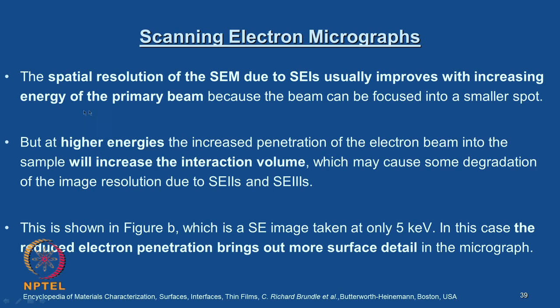To summarize: the spatial resolution of the SEM due to SE1 usually improves with increasing energy of the primary beam because the beam can be focused into a smaller spot. But at higher energies, the increased penetration of the electron beam into the sample increases the interaction volume, which may cause degradation of image resolution due to SE2s and SE3s. Image B, a secondary electron image taken at only 5 keV, shows that reduced electron penetration brings out more surface detail.